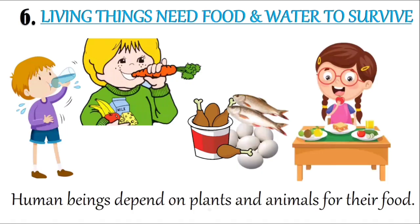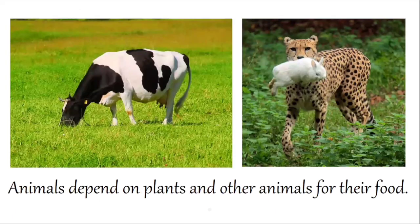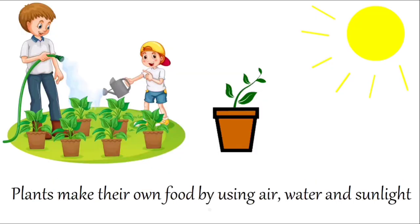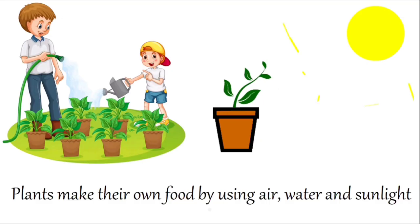Living things need food and water to survive. Human beings depend on plants and animals for their food. Plants make their own food by using air, water, and sunlight.